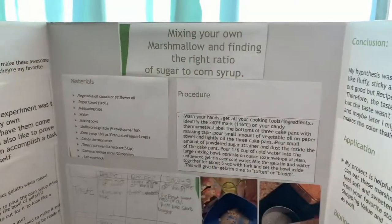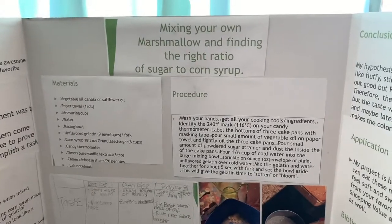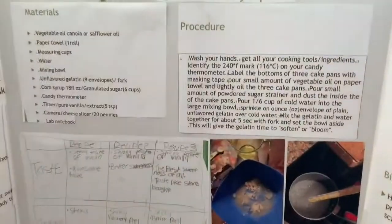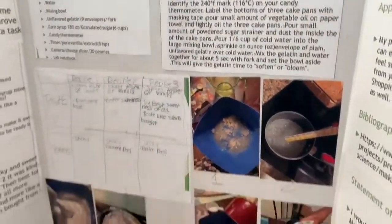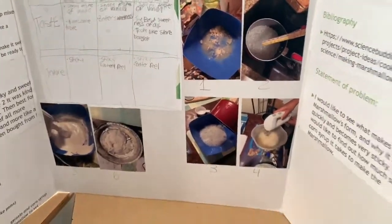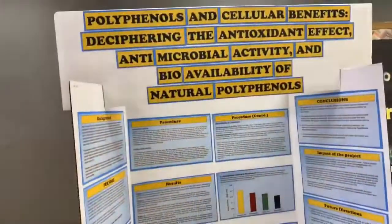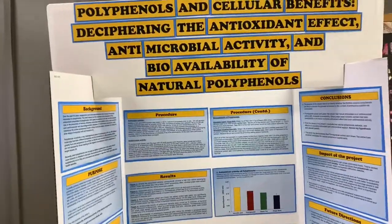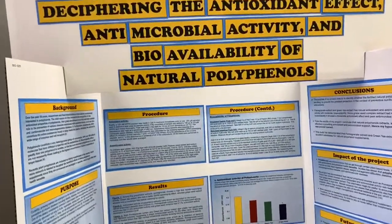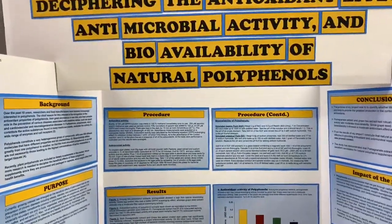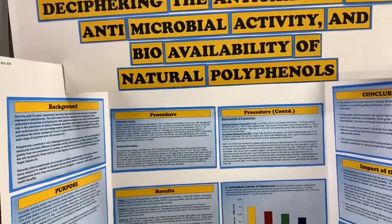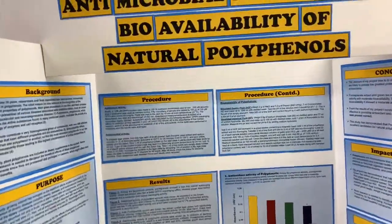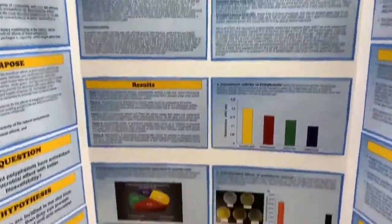The next project is titled 'Mixing Your Own Marshmallow and Finding the Right Ratio of Sugar to Corn Syrup.' Up next is 'Polyphenols and Cellular Benefits: Deciphering the Antioxidant Effect, Antimicrobial Activity, and Bioavailability of Natural Polyphenols.'